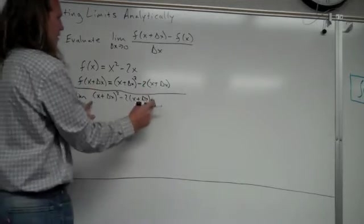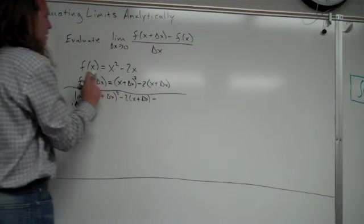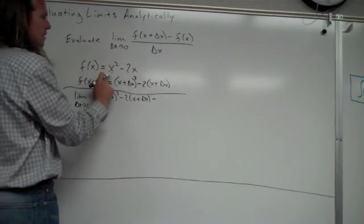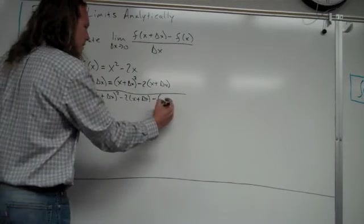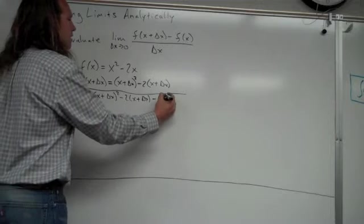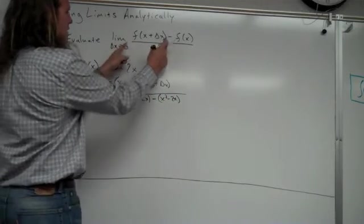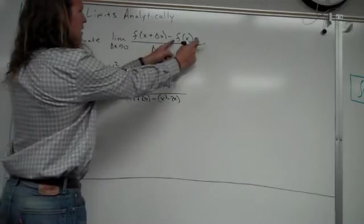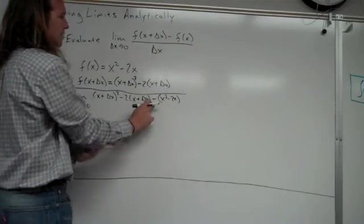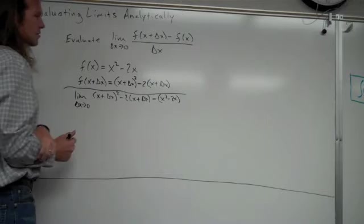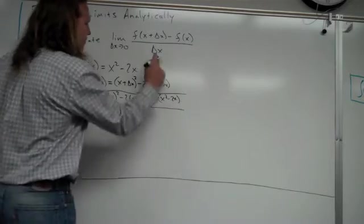Alright, so, you can see that right there. Now, minus f(x), I've got to make sure I distribute the negative, so I'm going to put parentheses around my f(x) when I put it in there. So again, f(x + delta x) is this part, f(x) is this part, and I put my parentheses to make sure I distribute that. And then it's all over delta x.